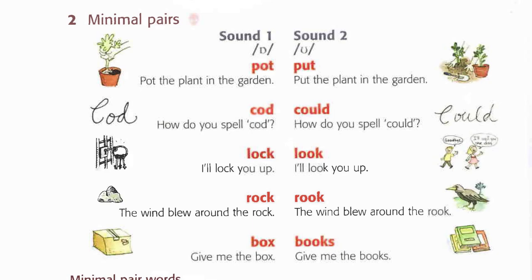2C: Pot the plant in the garden. Put the plant in the garden. How do you spell cod? I'll lock you up. I'll look you up. The wind blew around the rock. The wind blew around the rook. Give me the box. Give me the books.